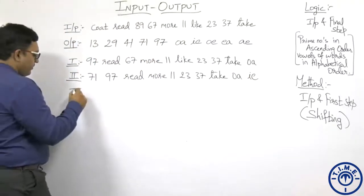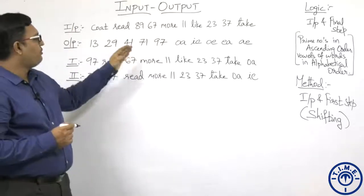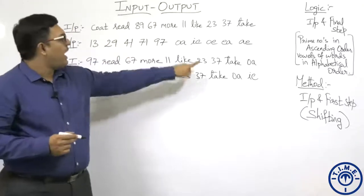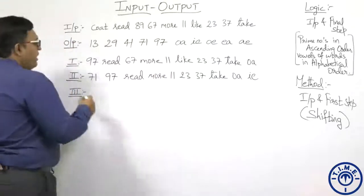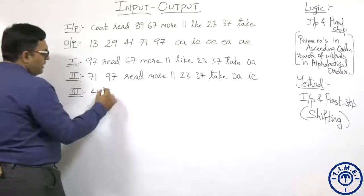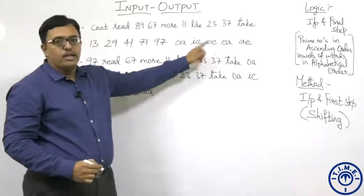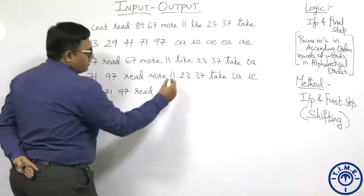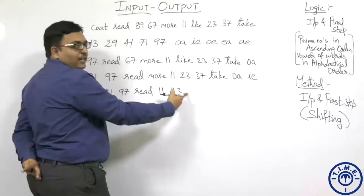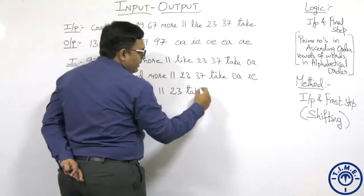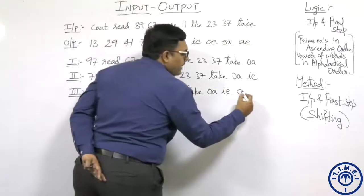Coming to step 3: 41 and OE have to be considered. 41 should come first — it comes from 37. OE comes from 'more'. So more and 37 should not be repeated. Step 3: 41, 71, 97, read — more is ignored — 11, 23, take, OA, IE, OE. OE is retained from more.